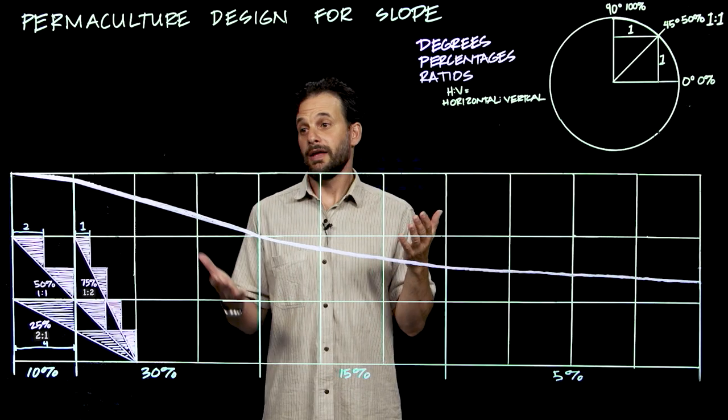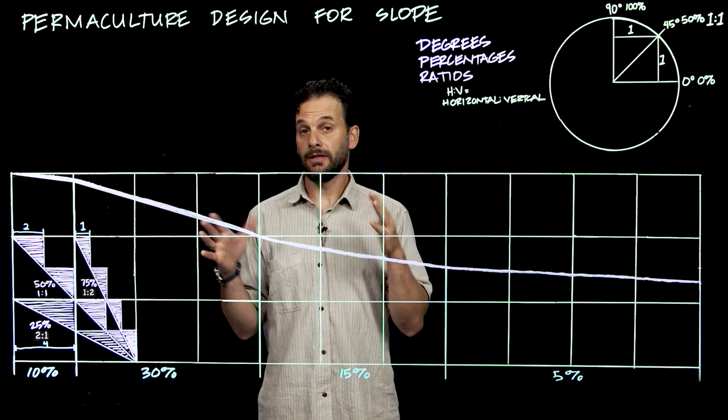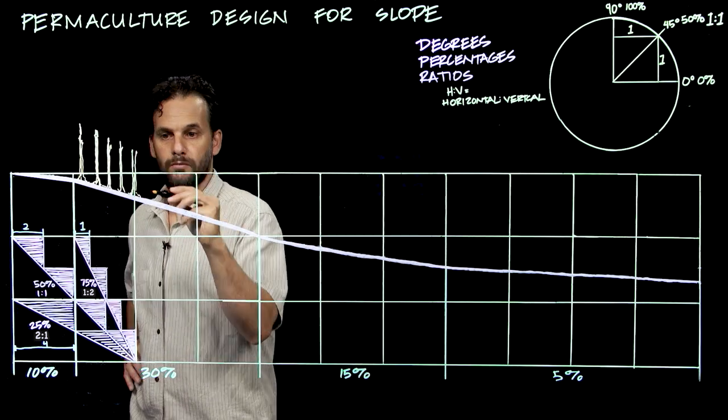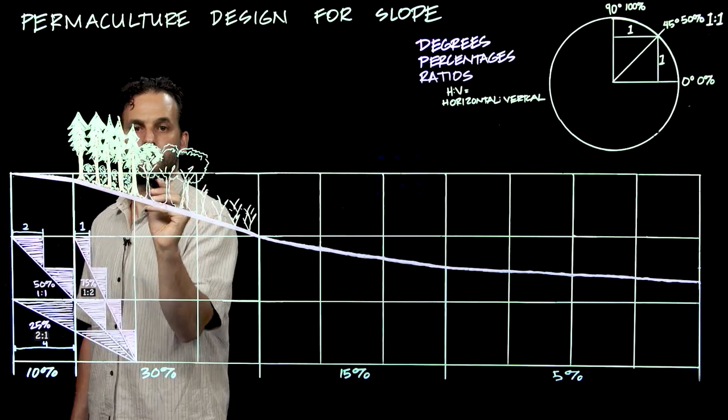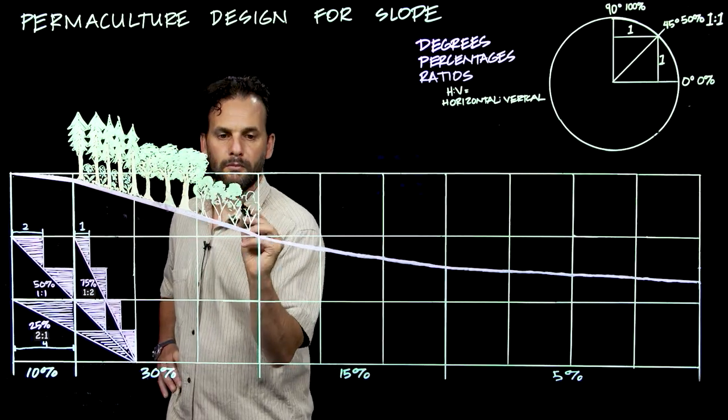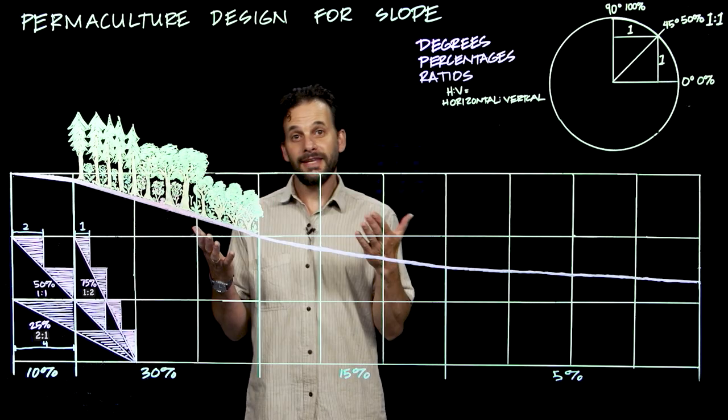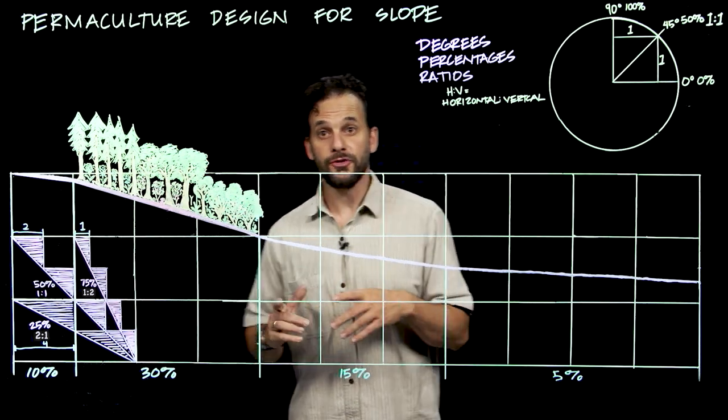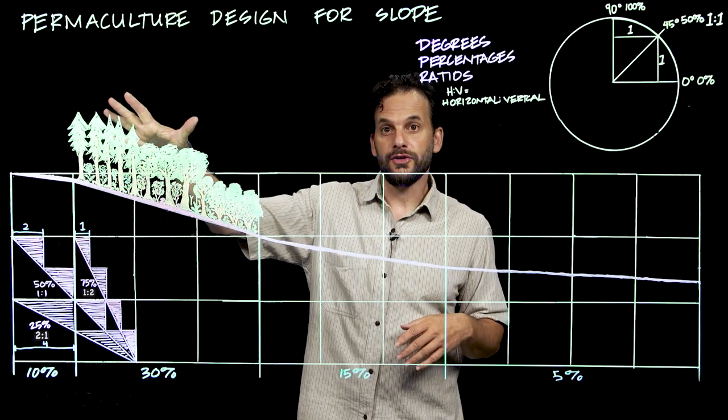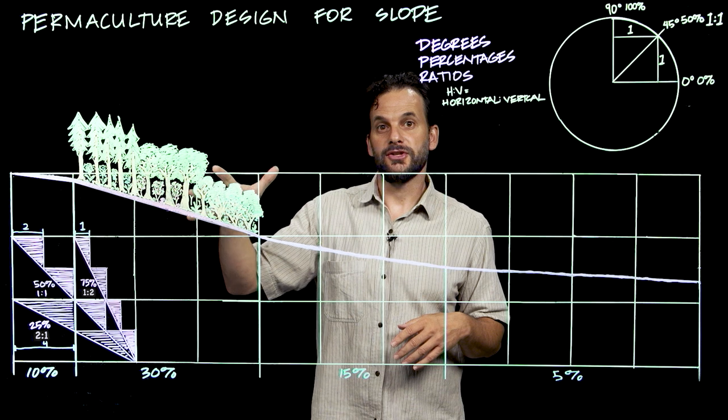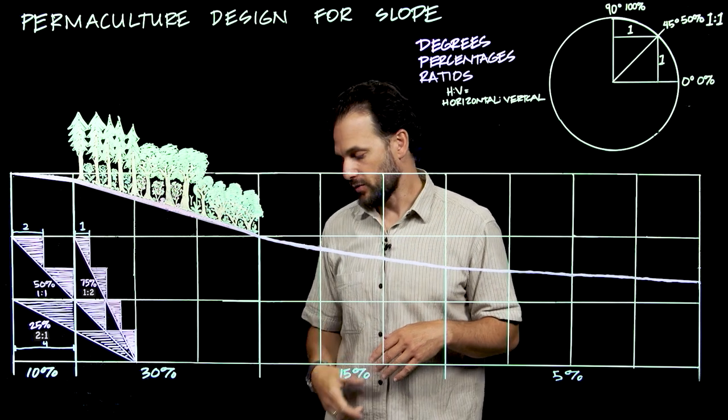So at 30%, Mollison says we want to keep this in permanent forest. This has several benefits. First off, this is the upper watershed, so the flow of water is slowed and absorbed to slowly percolate downslope and build the subsurface water table.